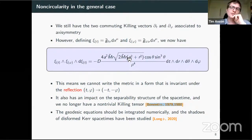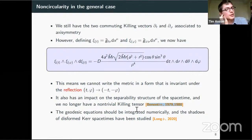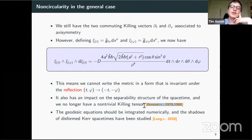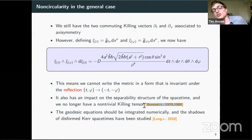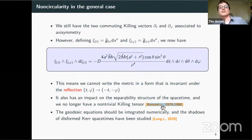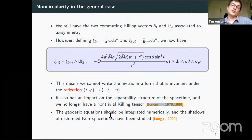The fact that we have a non-circular spacetime means we don't have a Killing tensor. For the Kerr metric, there's a hidden symmetry associated to a rank-two nontrivial Killing tensor, which allows writing the geodesic system as a first-order system, making Kerr geodesics much more tractable. In our case, we have constants of motion associated to dt and dphi, but there's no additional constant from a Killing tensor. So to study geodesics, you have to integrate them numerically — this was actually done by another group last year, who studied the shadows of these deformed Kerr metrics.